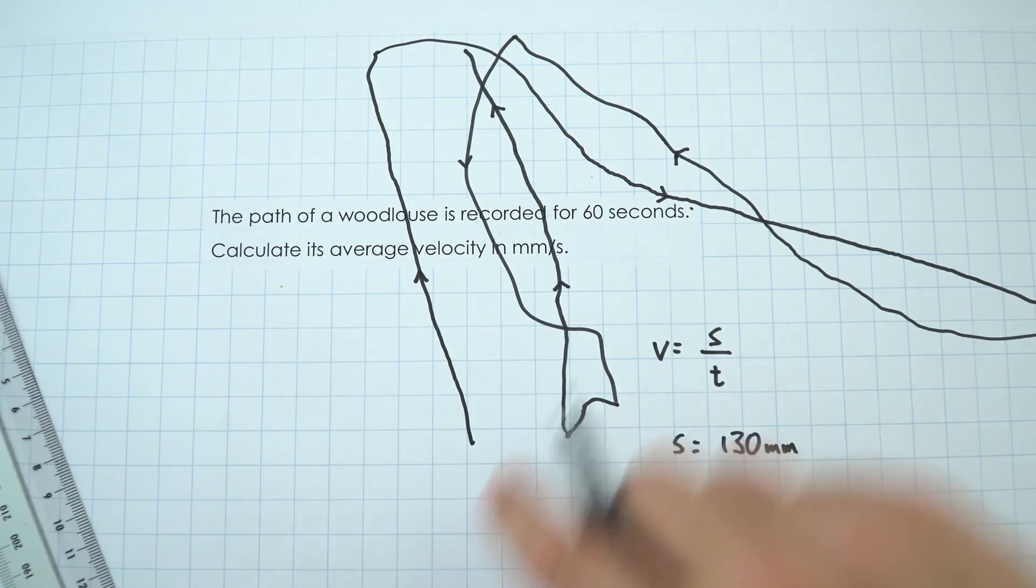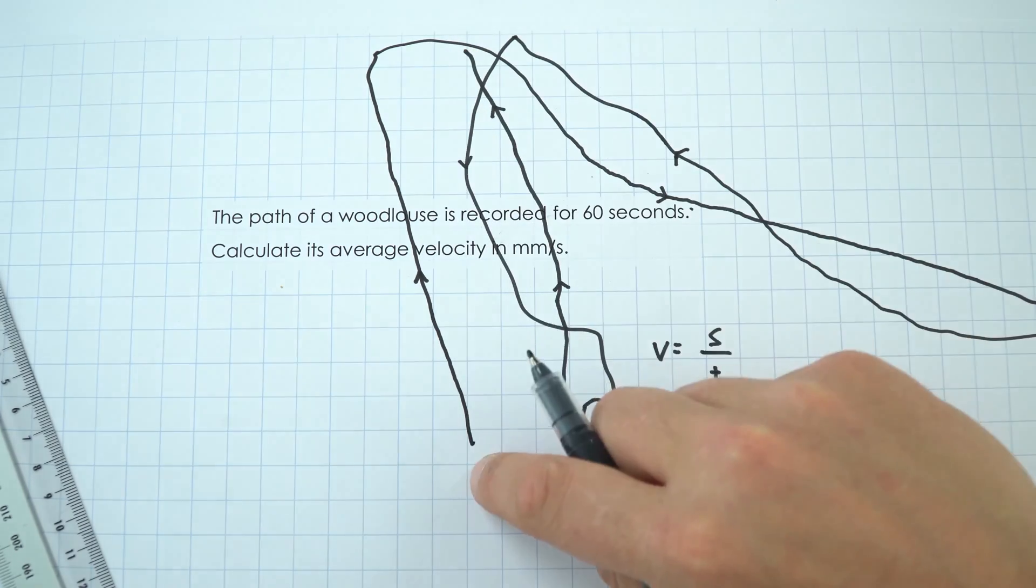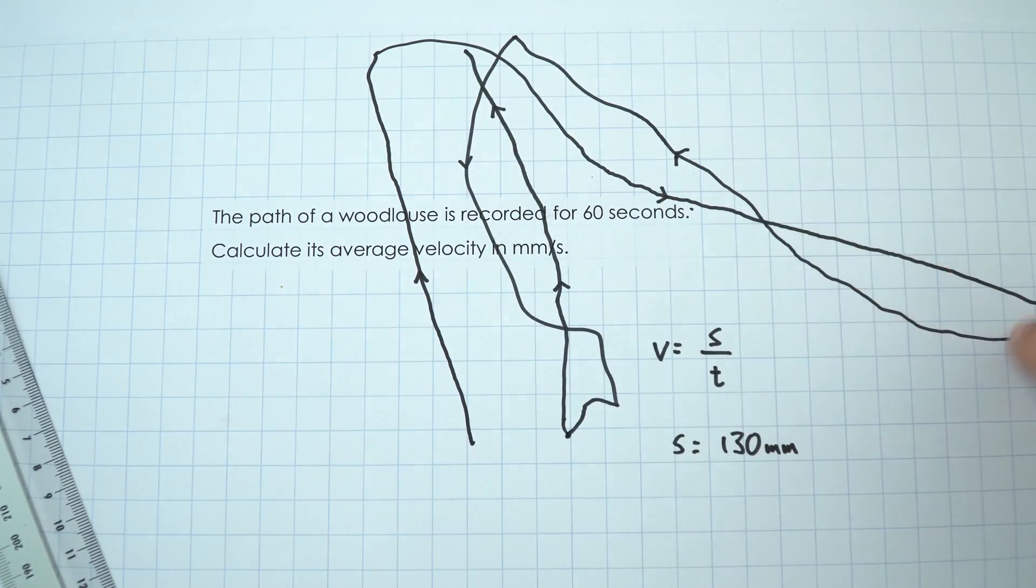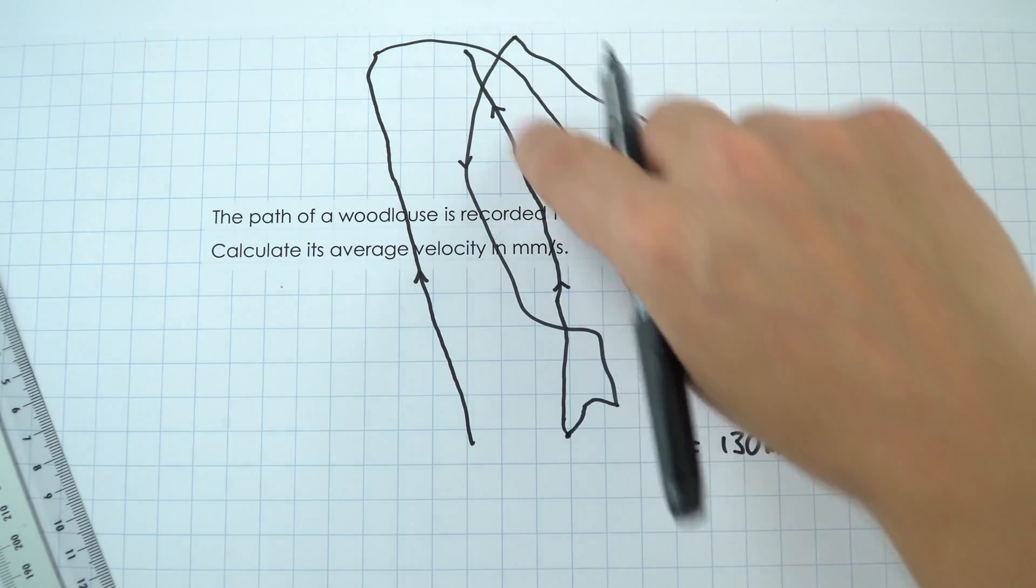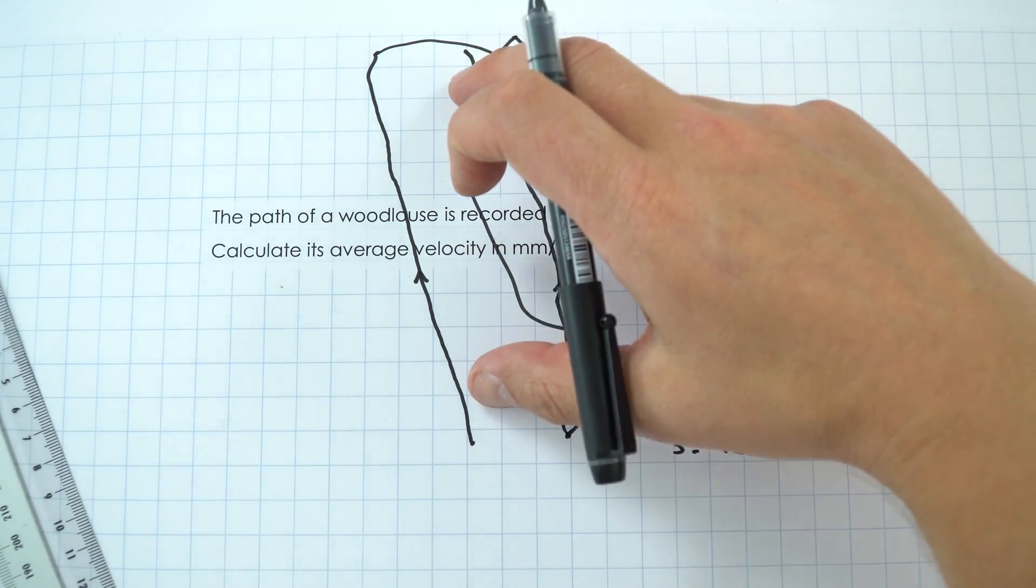Now what we're interested in is how far it ended up from where it started, not the total distance that it's actually traveled. And we can see that the actual distance it's traveled, because it's this kind of crazy random path over here, is a lot longer than its actual displacement.